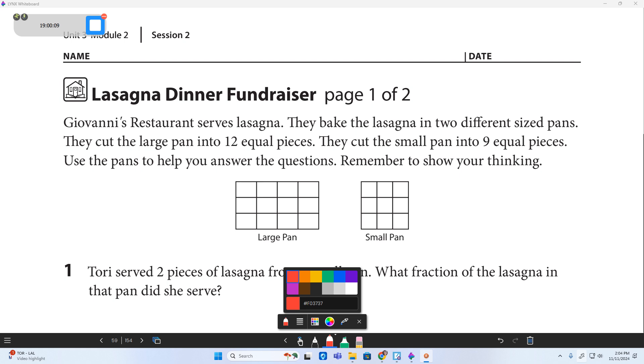Alright, lasagna dinner. I always say lasagna when I spell it because that's what it looks like. Giovanni - that sort of sounds like a name of one of our students this year, just a little bit. Giovanni's restaurant serves lasagna.